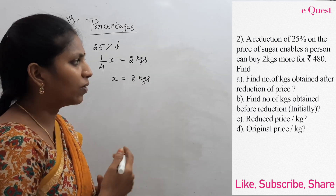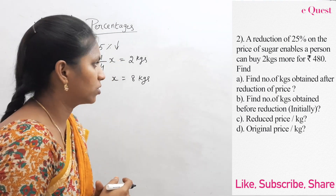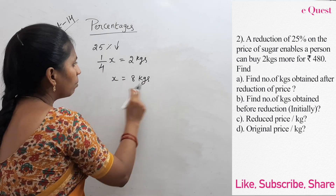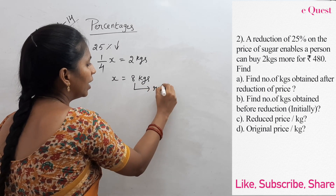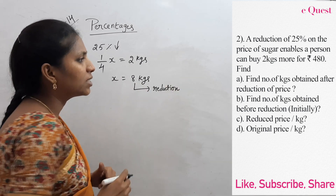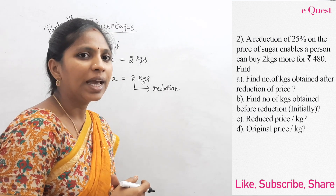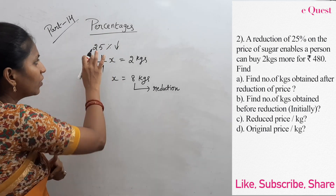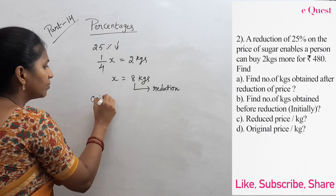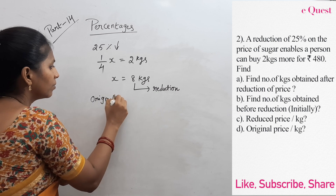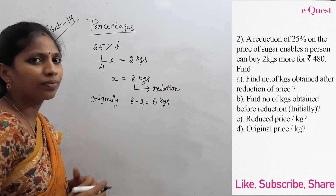After reduction of price, the number of kgs of sugar obtained is 8. Before reduction, that man got 2 kgs less, so 8 minus 2 equals 6 kgs originally before reduction.